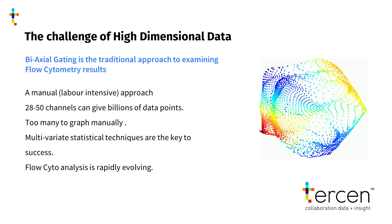The main challenge for cytometry is that results are normally analyzed by manual biaxial gating, a labor-intensive process. Since modern instruments can now present 50 channels of data per cell, this becomes virtually impossible to chart manually, and it forces researchers to make subjective decisions about which data to leave out of their analysis. To meet the challenge, statisticians have developed mathematical techniques that can be applied reliably to this level of data.